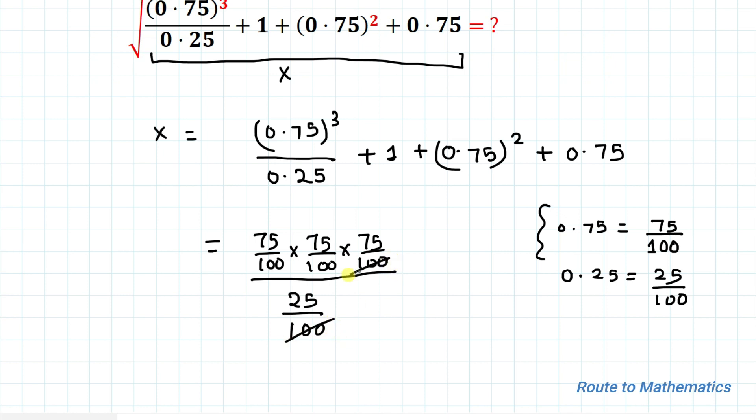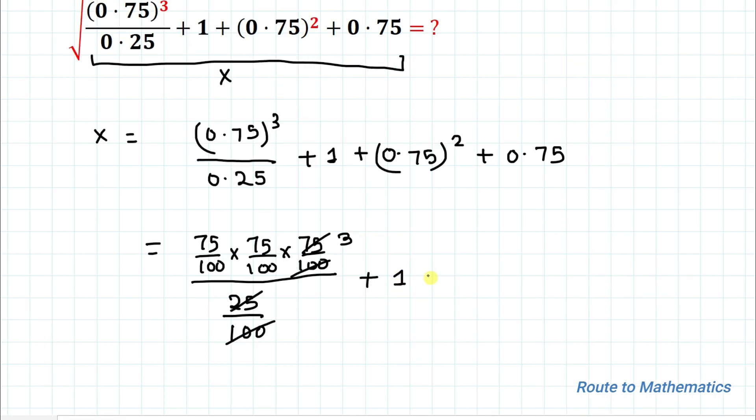So I will write it here 25 by 100. So here 100 100 get cancelled out. Similarly, 25 get cancelled out. 25 multiplied 3 is nothing but 75 plus 1 plus 75 by 100. Similarly, here also I can write 75 by 100.